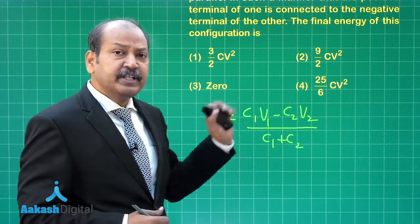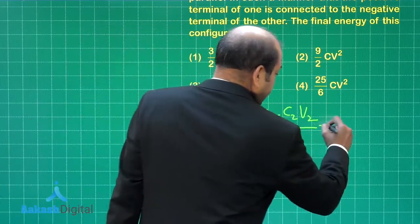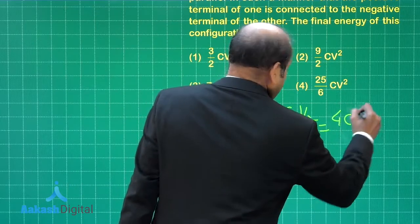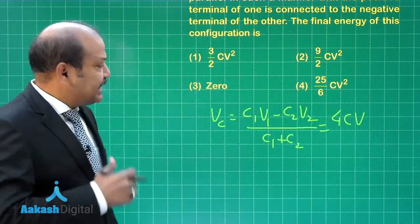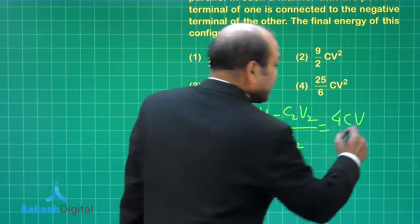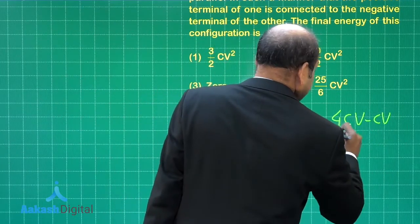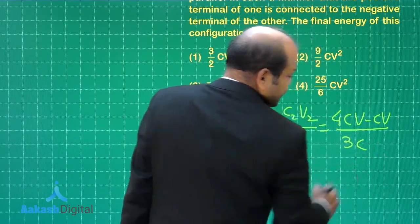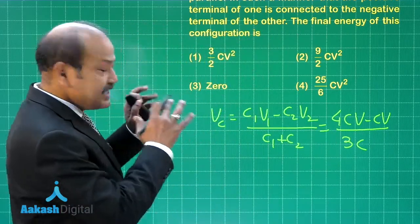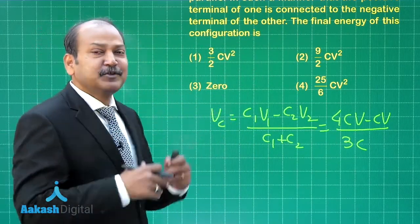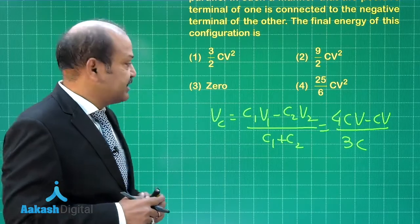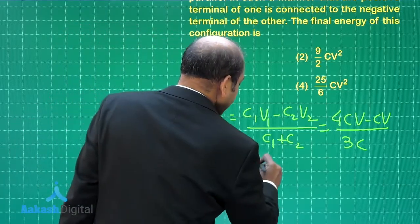And C₂ is C and V₂ is V. So 4CV minus CV divided by the total capacitance which is 3C. So we find that the V_c, the common potential after the two capacitors are connected, is coming out as V only.